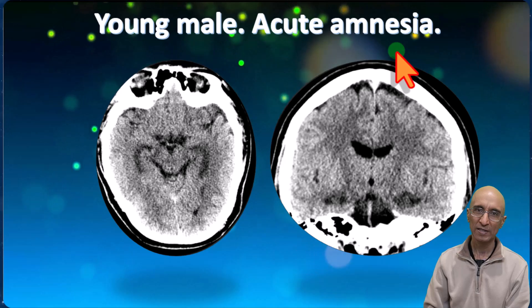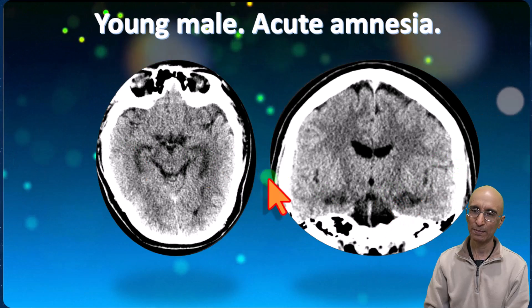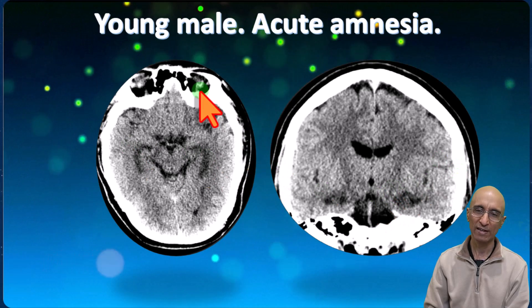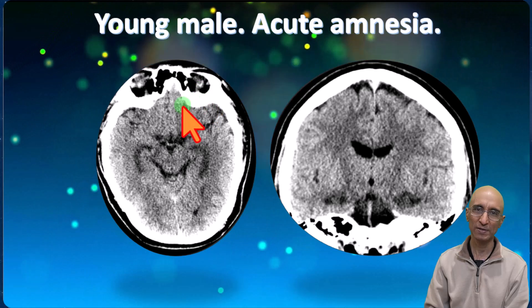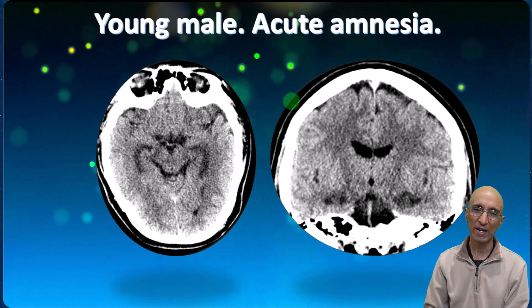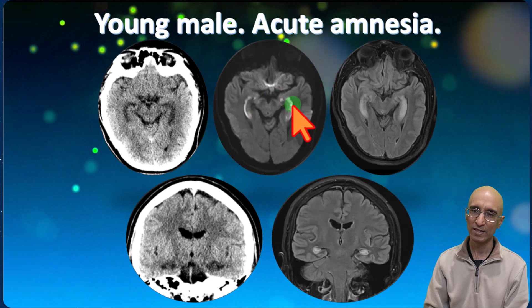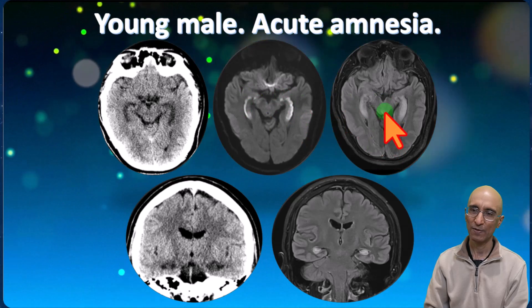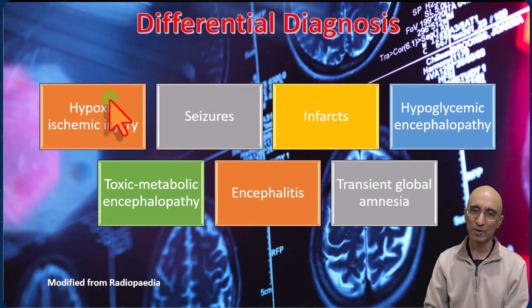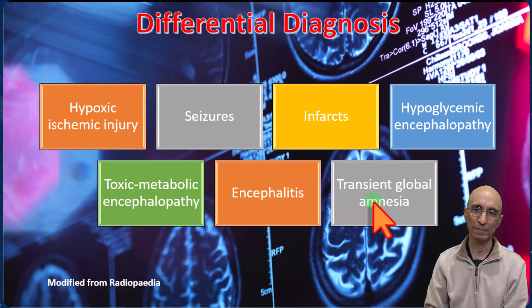Our patient has acute altered mental status with amnesia and hypodensity in the bilateral hippocampi, which was not recognized on the initial CT head evaluation. These findings, because they are symmetric, can be overlooked if we don't pay attention to the clinical details. On MRI, we saw restricted diffusion in the hippocampi with FLAIR hyperintensity. In terms of differential diagnosis, it could be hypoxic ischemic injury, seizures, infarcts, hypoglycemic encephalopathy, toxic metabolic encephalopathy, encephalitis, or transient global amnesia.